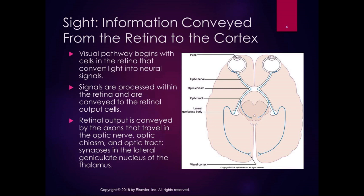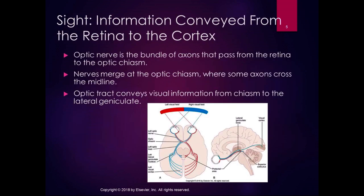There are interesting things about this pathway that differ from other neural pathways. The optic nerve is the bundle of axons passing from the retina to the optic chiasm. At the chiasm, the nerves merge — some cross and some don't. The nasal half of the retina (the medial part, close to your nose) crosses the midline at the chiasm and projects to the contralateral visual cortex. The temporal half (closer to your ears) continues ipsilaterally to the ipsilateral visual cortex.